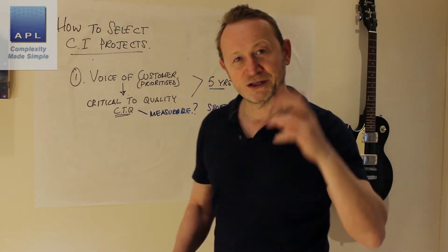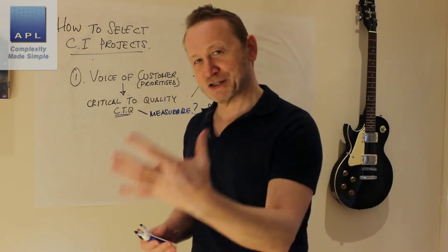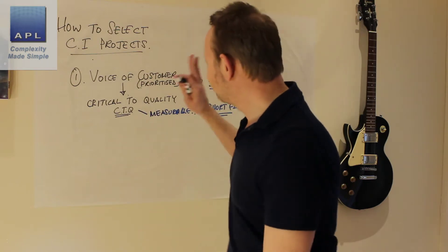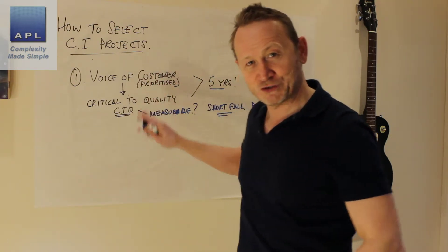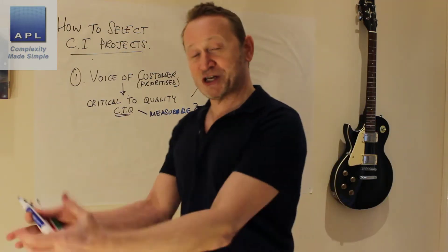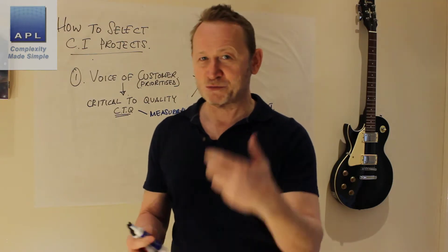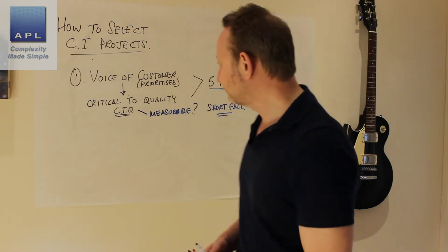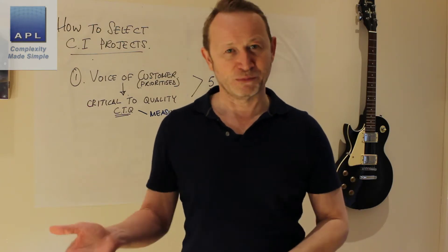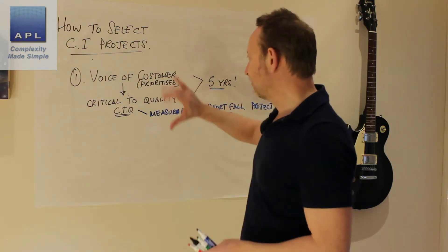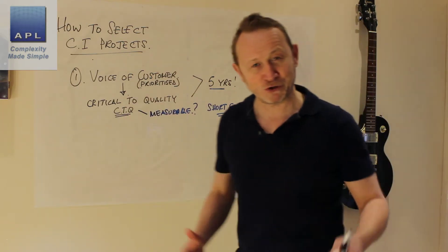Doing it this way is great because it can pick out projects for Design for Six Sigma — it can tell your designers what to do. This works when you're designing new products and services, but it also tells you for the services and products you have in production at the moment what things you should work on to improve. So: voice of the customer, CTQs, look for the shortfall, do a project — very straightforward.